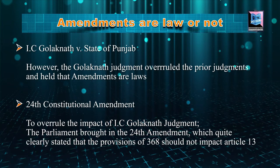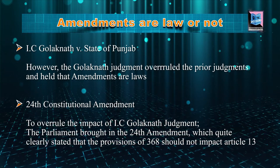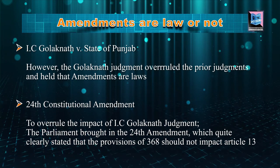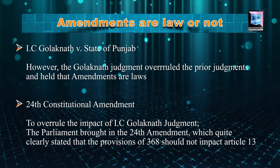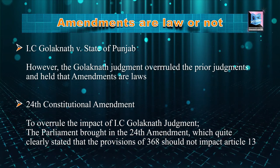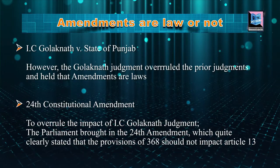We then move to IC Golaknath versus State of Punjab, 1967, where the court overruled Shankariprasad and Sajjan Singh and said amendments are a law. They said it is not written anywhere under Article 368, the provision providing for amendments, that the power to amend stays absolutely with Parliament. That means Parliament does not have absolute power — Parliament does not have the power to amend the Constitution where it is affecting fundamental rights, and any such amendment shall be subject to Article 13 Clause 2. This created uproar across India because the amending power had been taken away from Parliament. To overrule the effect of IC Golaknath, the 24th Amendment 1971 was passed, which stated quite clearly under Article 13 Clause 4 that amendments are not law.